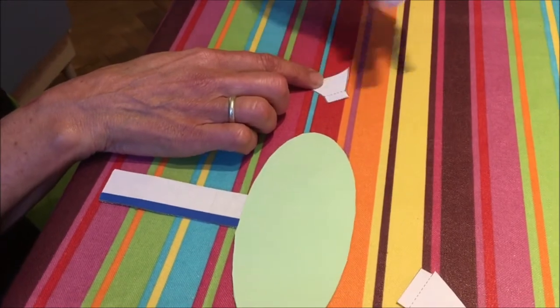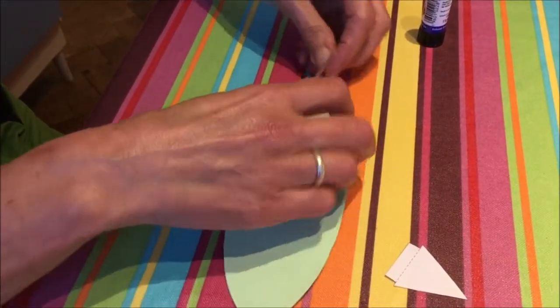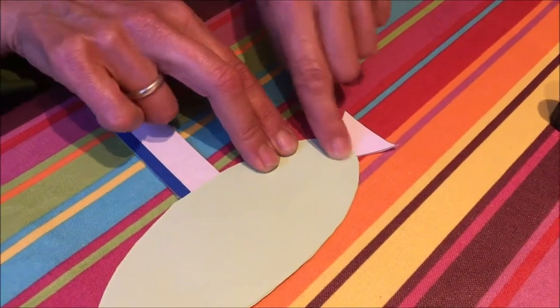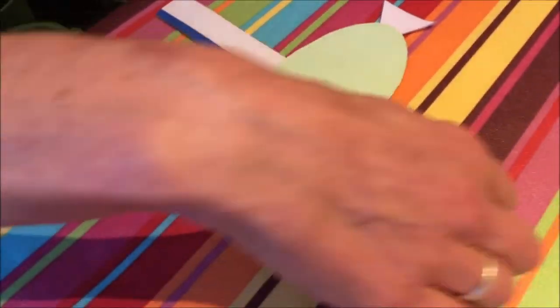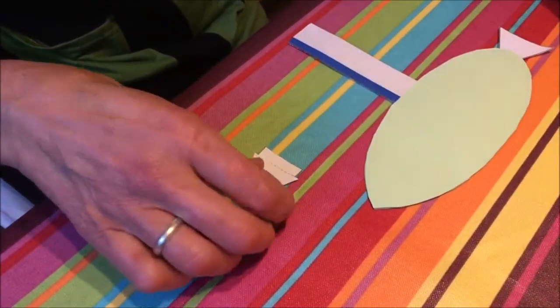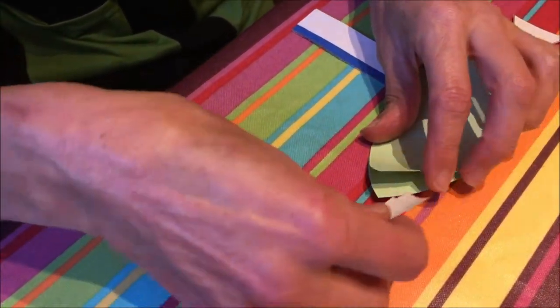Next, the tail goes on the rounded end. Push it between the two parts, and the beak at the more pointed end. A bit of glue and in that goes.